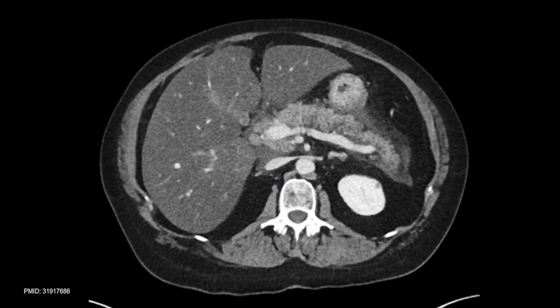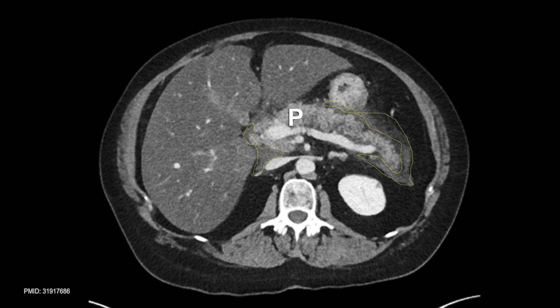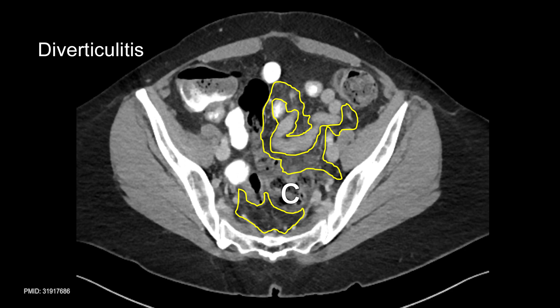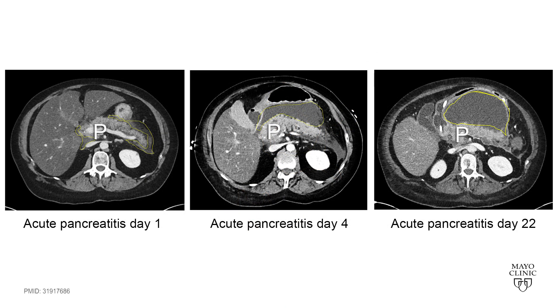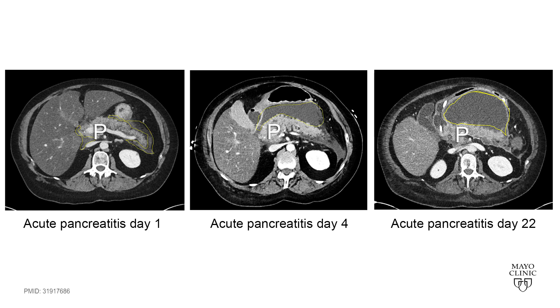Patients with pancreatitis or diverticulitis often present to the emergency room with belly pain. A CT scan is commonly done in this setting and often shows abdominal fat involvement called stranding around the pancreas or colon respectively. This commonly progresses to involve larger areas of fat in pancreatitis over the next several days, which is rare in diverticulitis.